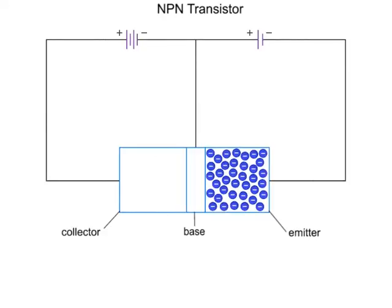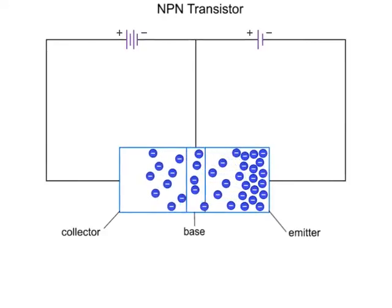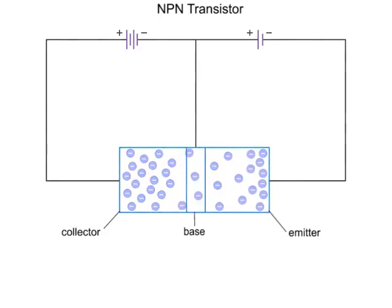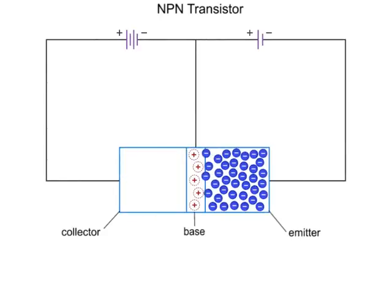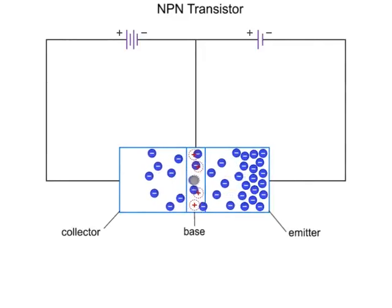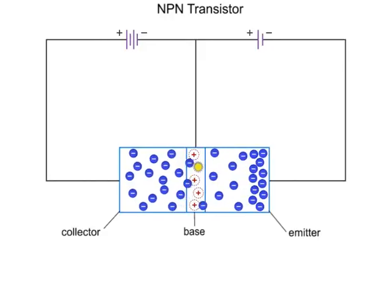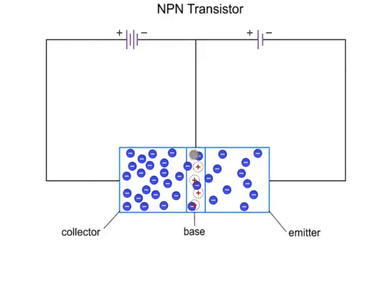Most of the emitter carriers diffuse through the thin base region because they are attracted by the collector region. Some of the electrons are attracted by the holes in the base region and will move off through the right side, shown here. This is a very small amount compared to the current moving through the base into the collector.